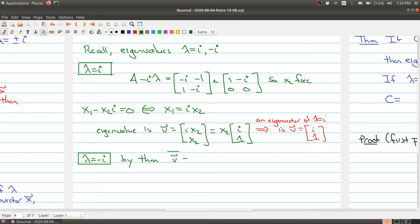So what we have is by the theorem, if we take v and take its conjugate, we have to take the conjugate of everything inside of here, and that is equal to [-i, 1], which is the eigenvector of lambda equals negative i. We didn't have to do any work, we just had to take the conjugate of each of the entries.